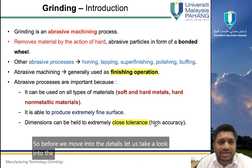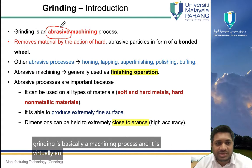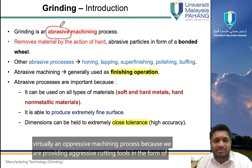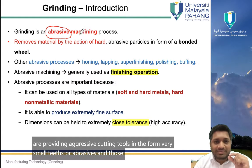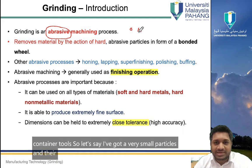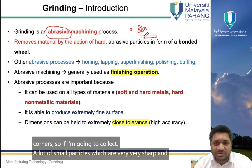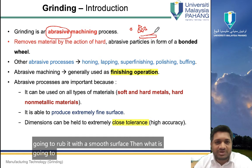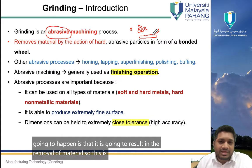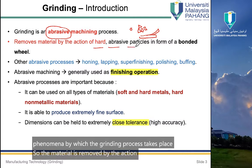Grinding is basically a machining process — virtually an abrasive machining process — because we are providing abrasive cutting tools in the form of very small teeth or abrasives. Those abrasives act as cutting tools. Small particles with very sharp corners, when rubbed against a smooth surface, result in the removal of material. This is the phenomenon by which the grinding process takes place.